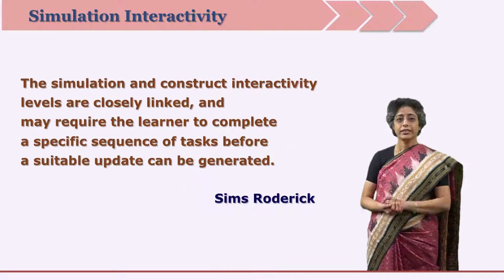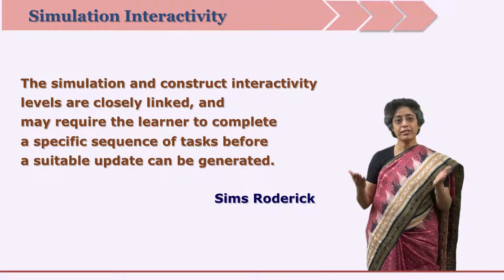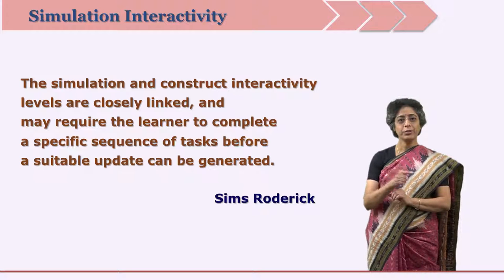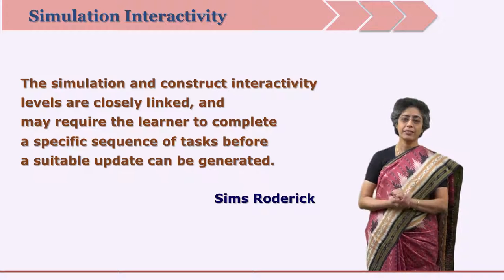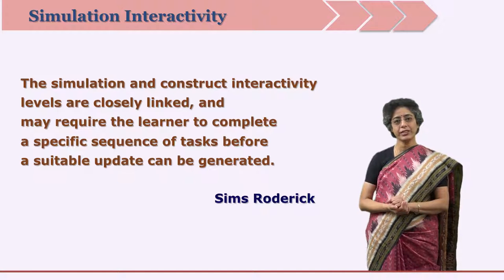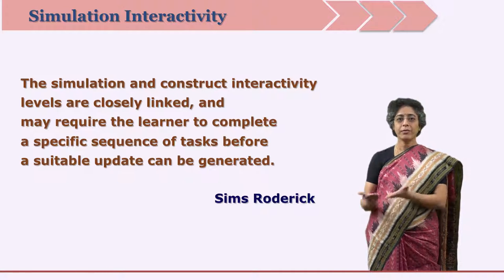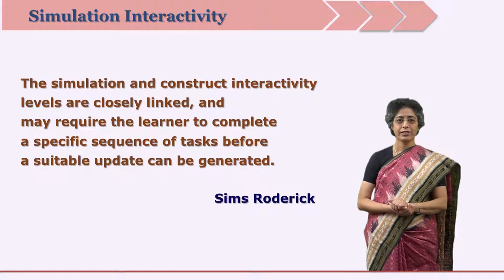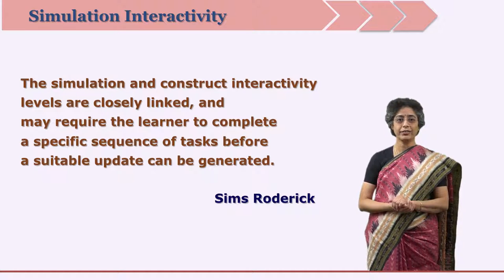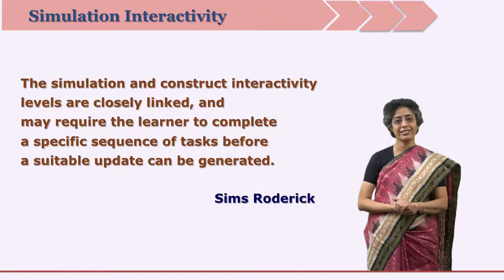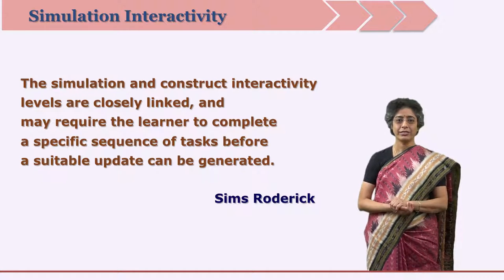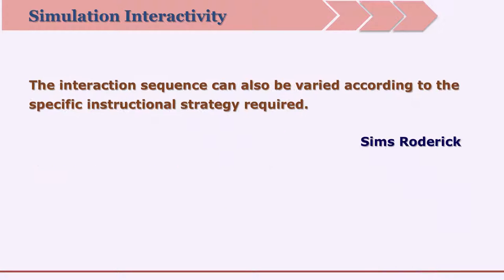The learner can then try again with different variables — by changing quantities of some components or reducing heat — until the learner reaches the right parameters. Consequences are the learning experiences in such mutual elaboration. In both construct interactivity and simulation interactivity, the same control and choice is given to learners, decision making lies with the learners, and learners can see the consequences and output. The interaction sequence can also be varied according to the specific instructional strategy required.